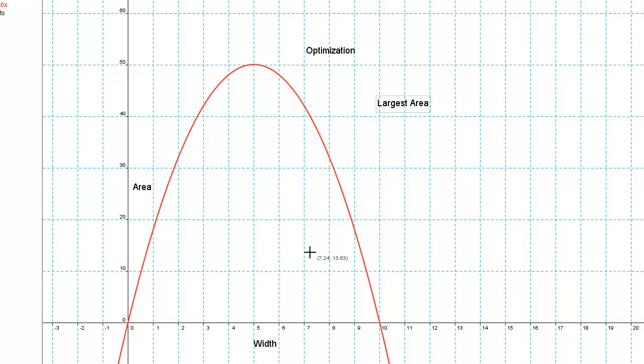And so as you can see in this case with a width of 5 we get an area of 50 and I haven't specified units, but let's say that's meters.